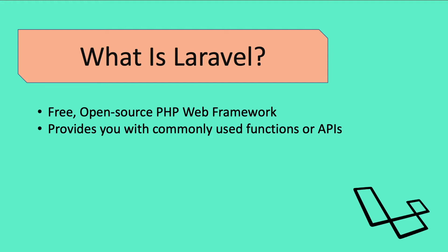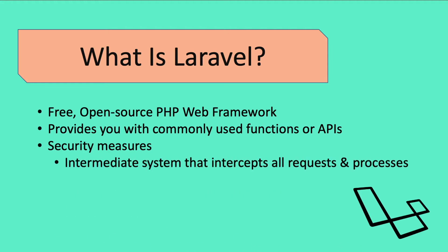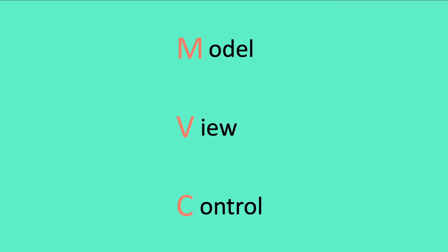When Laravel is being developed, it incorporates security measures to prevent people from hacking and injecting harmful code into the server remotely. That is why it is an intermediate system that intercepts all requests and processes, and denies access to any of its components. It also follows the MVC architecture pattern, also known as Model-View-Controller, which is very commonly used right now when designing web and mobile applications.